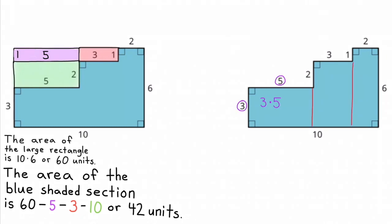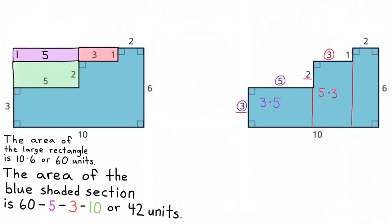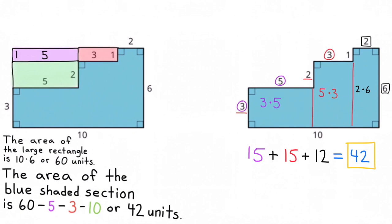Now I've broken down the shape into 3 quadrilaterals. The quadrilateral on the left has dimensions of 3 times 5. The quadrilateral in the middle has dimensions of 5 times 3. And the quadrilateral on the right has dimensions of 2 times 6. The area on the left is 15, the area in the middle is also 15, and the area on the right is 12. 15 plus 15 plus 12 equals 42 — just like the shaded blue area in the shape on the left, the area of this shape is also 42.